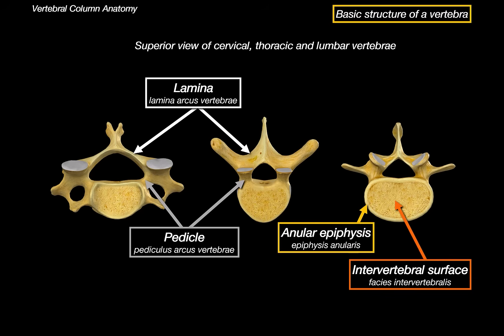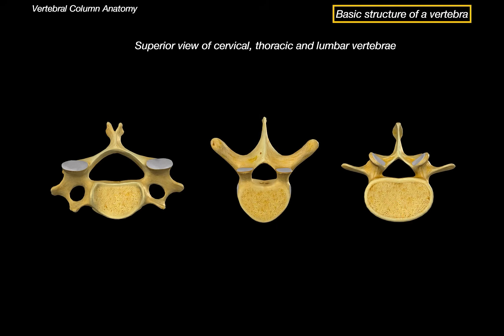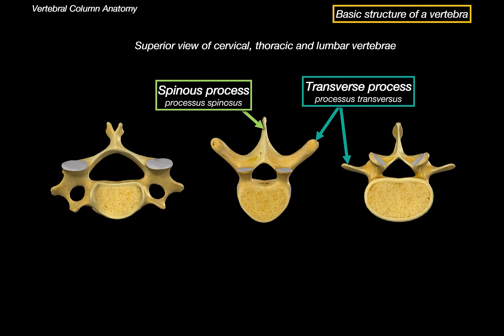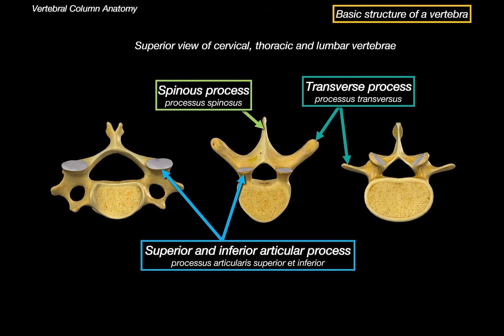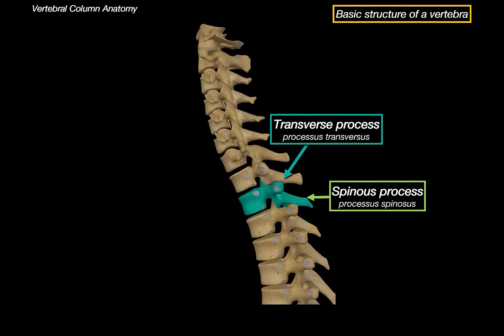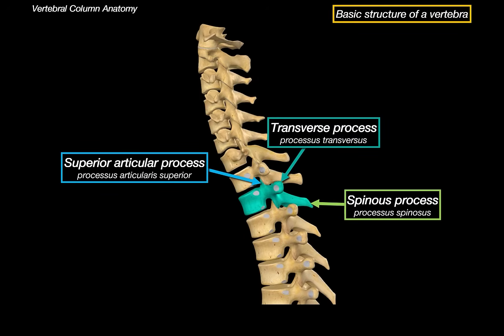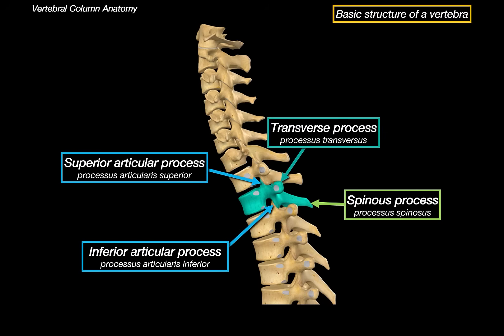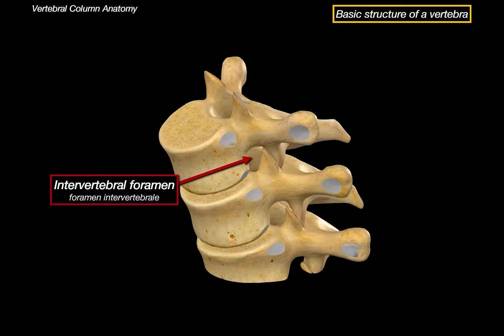Throughout all vertebrae in the spine, there is a large hole in the middle called the vertebral foramen, bordered by the body and the arch. The processes are simple: there's a spinous process pointing backwards, which is the one you can often see and feel on a person's back. On the sides we can see the transverse processes, which differ in size across the vertebrae. And we can see the superior and inferior articular processes. The superior articular process is the bony part of the vertebrae that faces upwards and forms a joint with the vertebrae above, whereas the inferior articular process goes downwards and connects with the vertebrae below. When those vertebrae go together, they form the intervertebral foramen and the intervertebral canal.